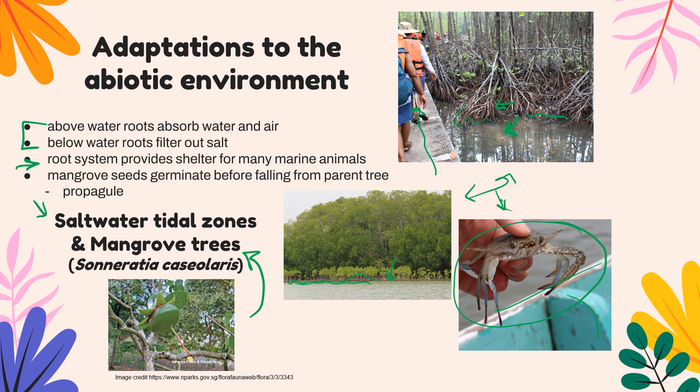One more fascinating thing about mangrove trees: their seeds actually start to germinate before falling from the parent tree. You can see the fruit — the seed of the mangrove — with a super cool propagule, which is basically the germination of the seed while it's still attached to the parent plant. This allows it to set up a stabilizing structure so that when it does fall from the parent plant, it doesn't sink too far into the water or float too far away from the tidal zone.